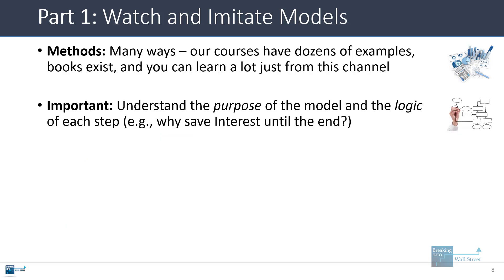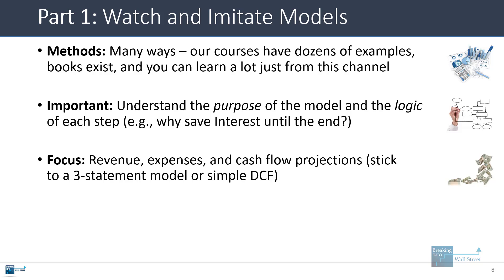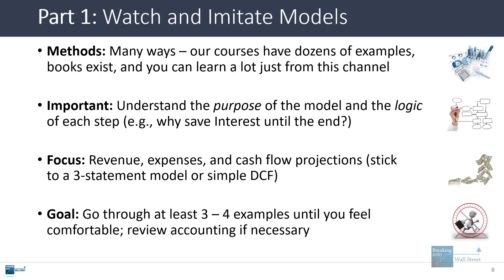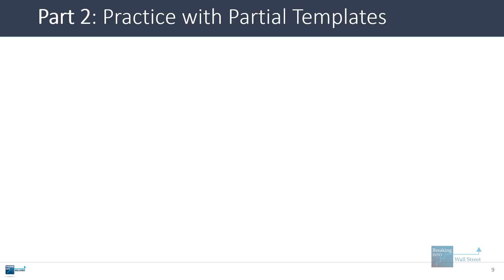Focus on those big high-level takeaways rather than obsessing over whether operating lease assets should be a percent of opex or revenue. In this step, I recommend focusing on revenue, expenses, and cash flow projections — stick to three-statement models or very simple DCF models. We have a good Walmart example if you want a simple DCF. Don't bother with merger models or LBO models yet. Go through at least three or four examples until you feel comfortable, and if there's accounting detail you don't understand, I like accountingcoach.com as a really good, simple source.